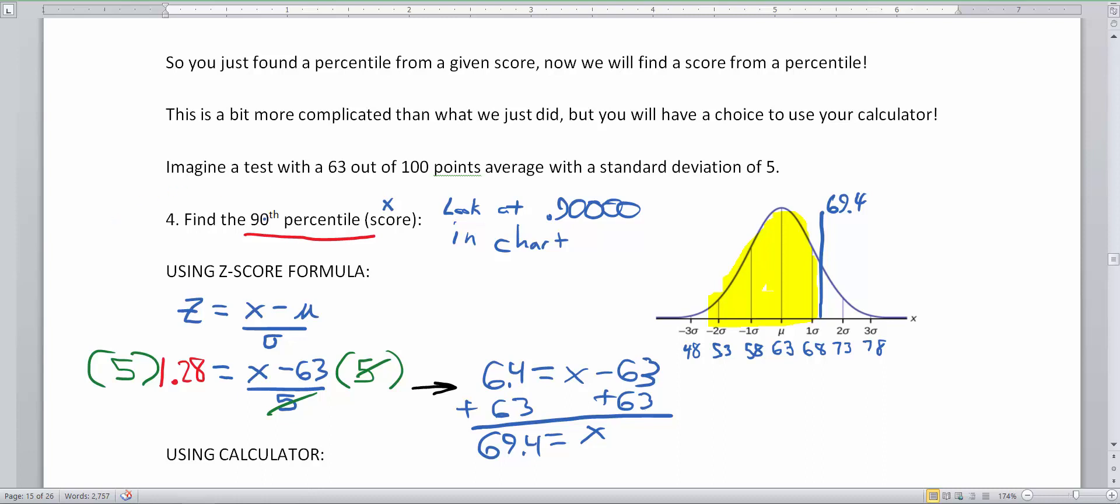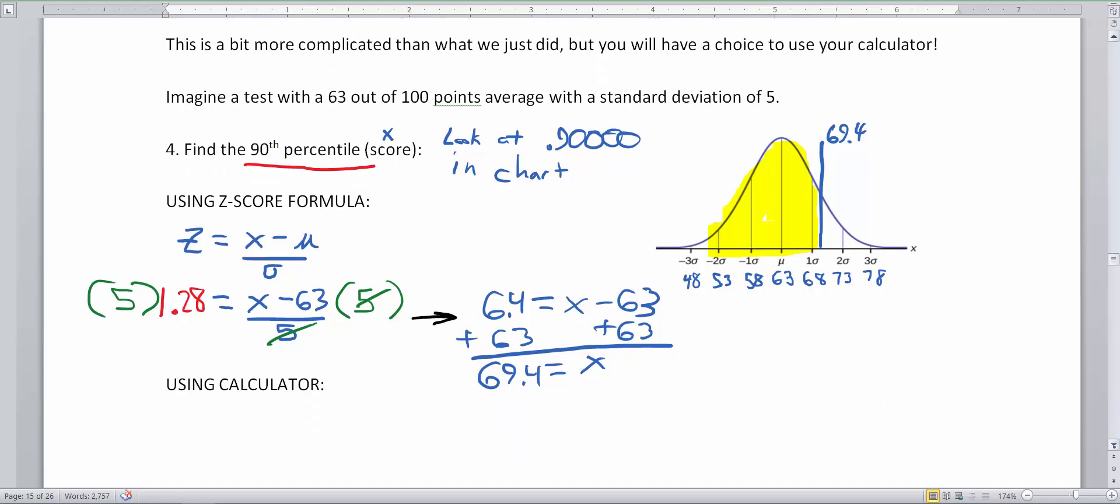We take the percentile, we look it up in the chart, in the middle of the chart, because that's where all the percentiles are. Then we convert that to a z-score, plug it into the equation, and solve for x. Now that is a pretty challenging feat if you haven't done some basic algebra or college algebra for a while. So it might be nice to also learn how to do this on the calculator.